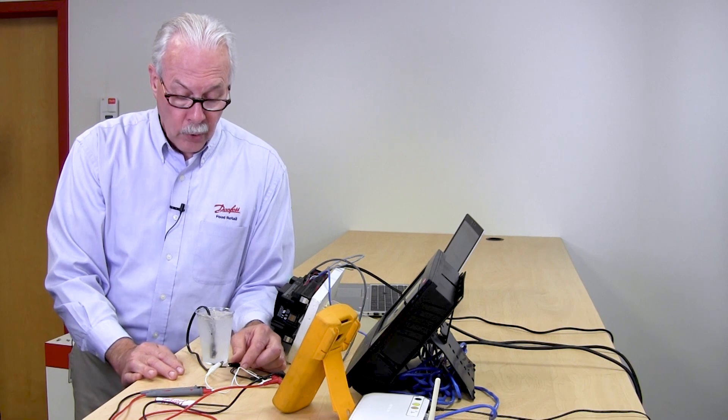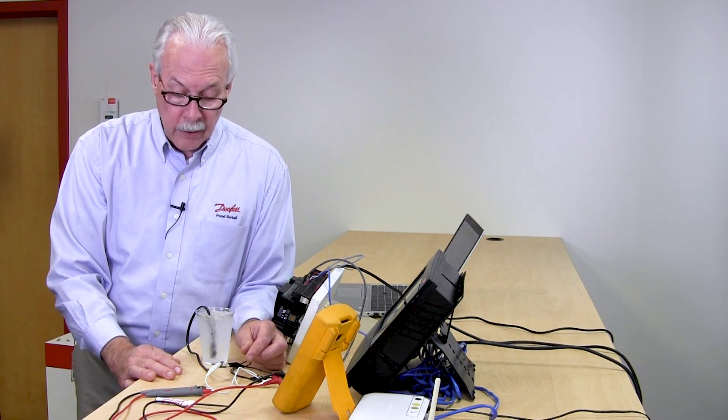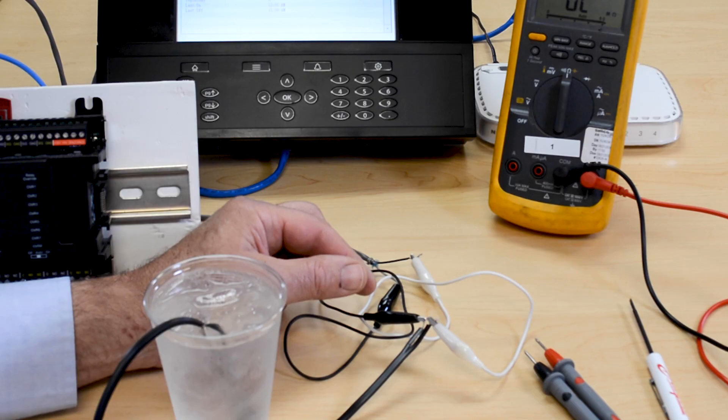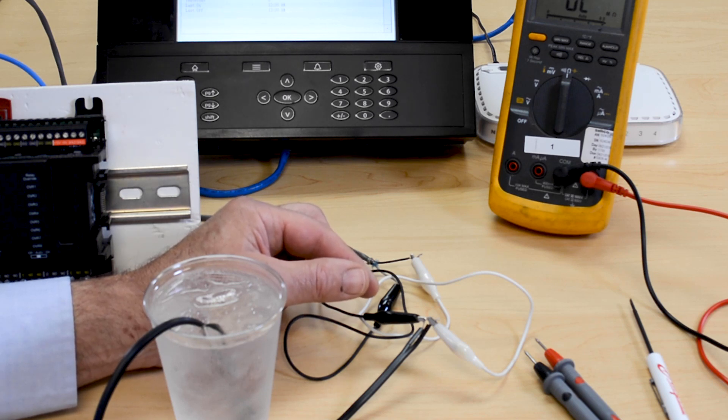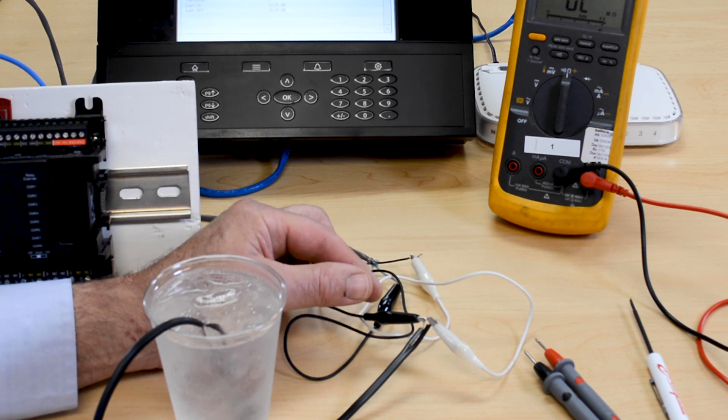We're now down on the floor and we're going to further evaluate or troubleshoot this problem. We're not going to go to where the sensor is inside the case. We're going to go to where the wires are connected to the cable returning to the I.O. or back up to the motor room.